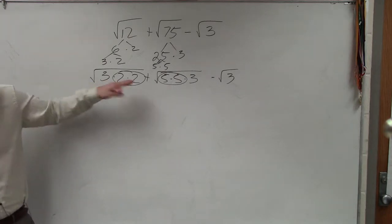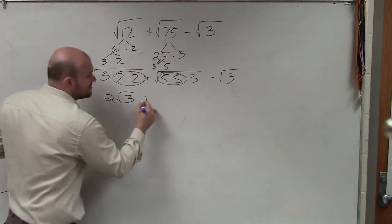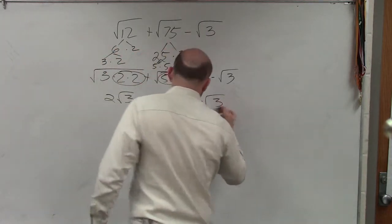So the square root of 2 times 2 is 2, square root of 3. The square root of 5 times 5 is 5 times square root of 3 minus the square root of 3.